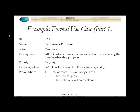Here's the first part — translating the e-commerce purchase use case we've seen before into a formal use case. We have an ID: 2.001. Name: e-commerce purchase. Actor: the customer. Description: allow customer to complete a transaction, purchasing the items in the shopping cart. Priority is of course very high. Frequency of use: 25% of customers — that's our conversion rate. So 25% of customers that come to our website and browse will buy, up to 1,000 customers per day.